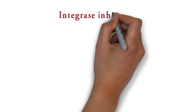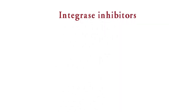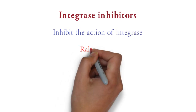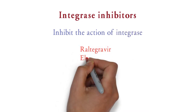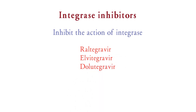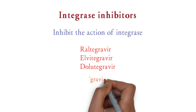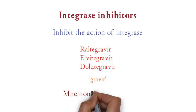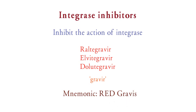The last class is integrase inhibitors. These drugs inhibit the action of integrase, which is required for insertion of the viral genome into the DNA of the host cell. Examples are raltegravir, elvitegravir, and dolutegravir. All the drugs contain 'gravir' in their name. You can remember these drugs by the mnemonic 'redgravis'.